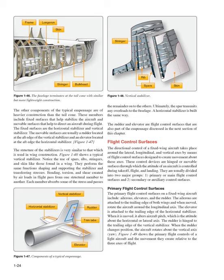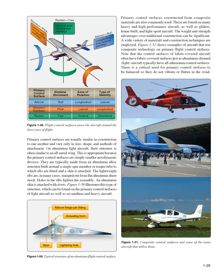The ailerons are attached to the trailing edge of both wings and, when moved, rotate the aircraft around the longitudinal axis. The elevator is attached to the trailing edge of the horizontal stabilizer; when moved, it alters aircraft pitch, which is the attitude about the horizontal or lateral axis. The rudder is hinged to the trailing edge of the vertical stabilizer; when the rudder changes position, the aircraft rotates about the vertical axis (yaw). Primary control surfaces are usually similar in construction to one another and vary only in size, shape, and methods of attachment. On aluminum light aircraft, their structure is often similar to an all-metal wing, as the primary control surfaces are simply smaller aerodynamic devices.